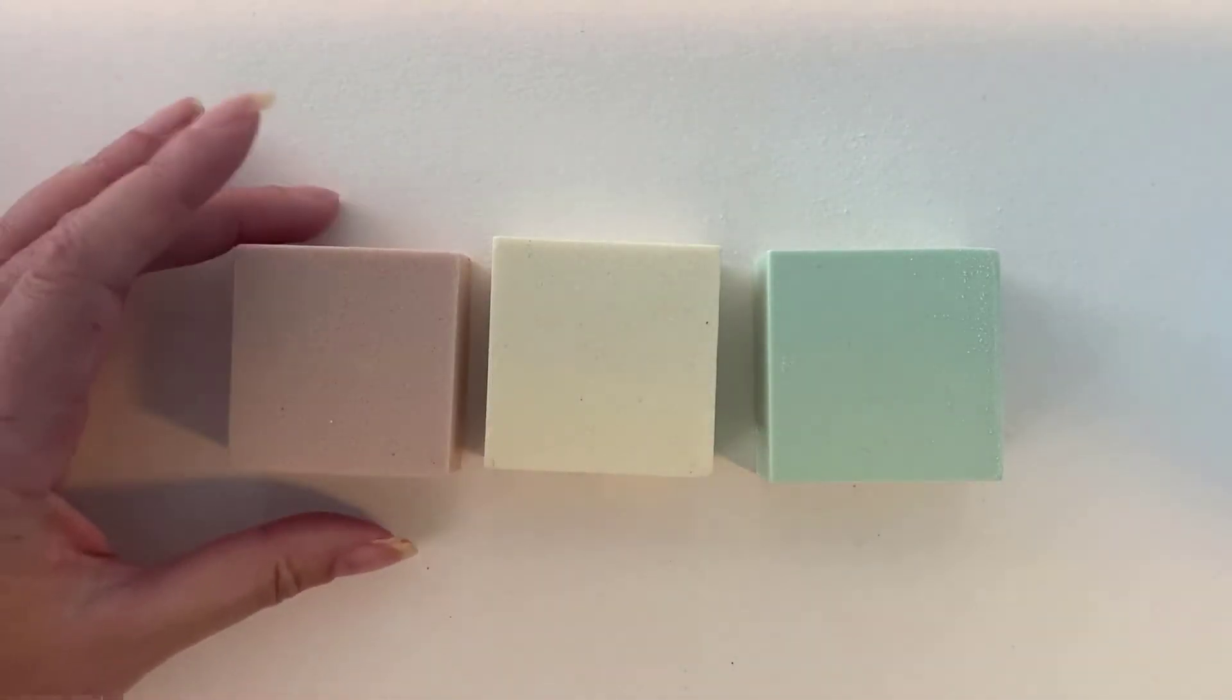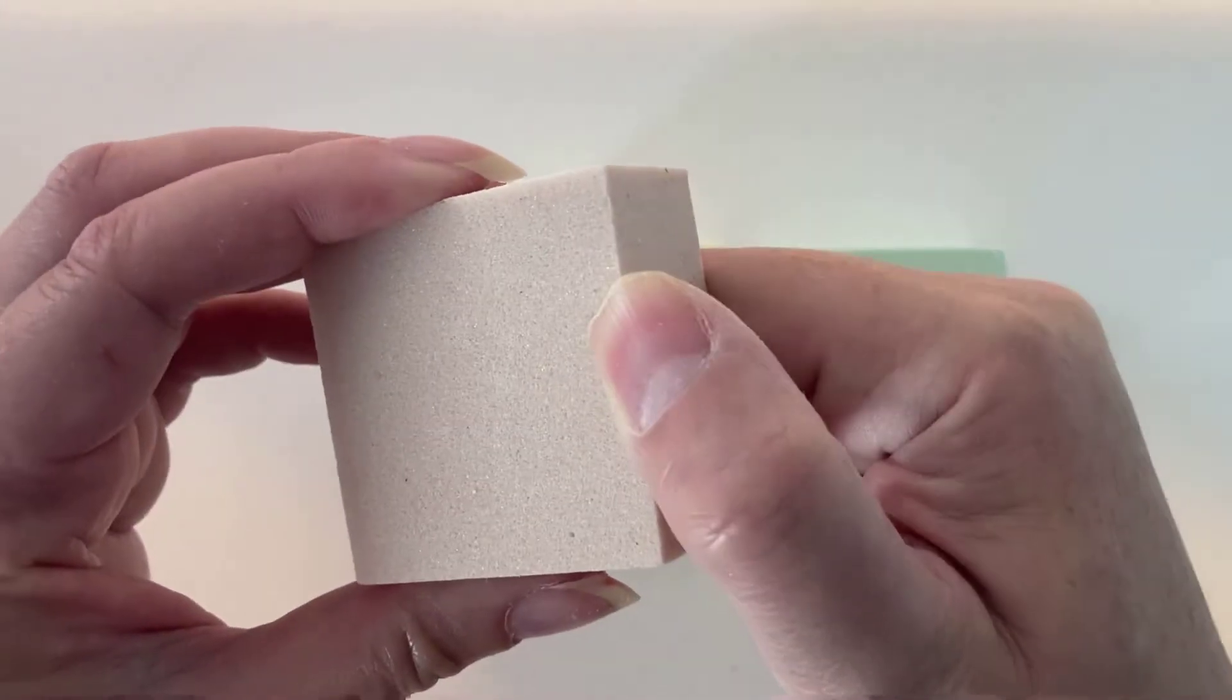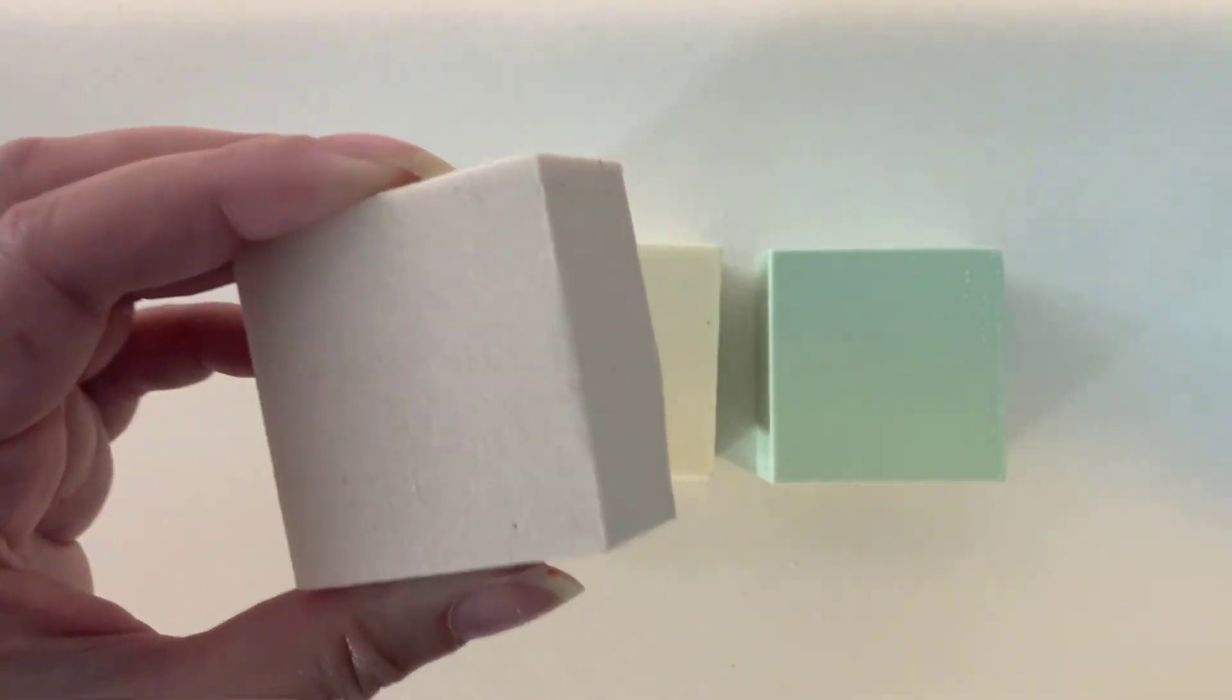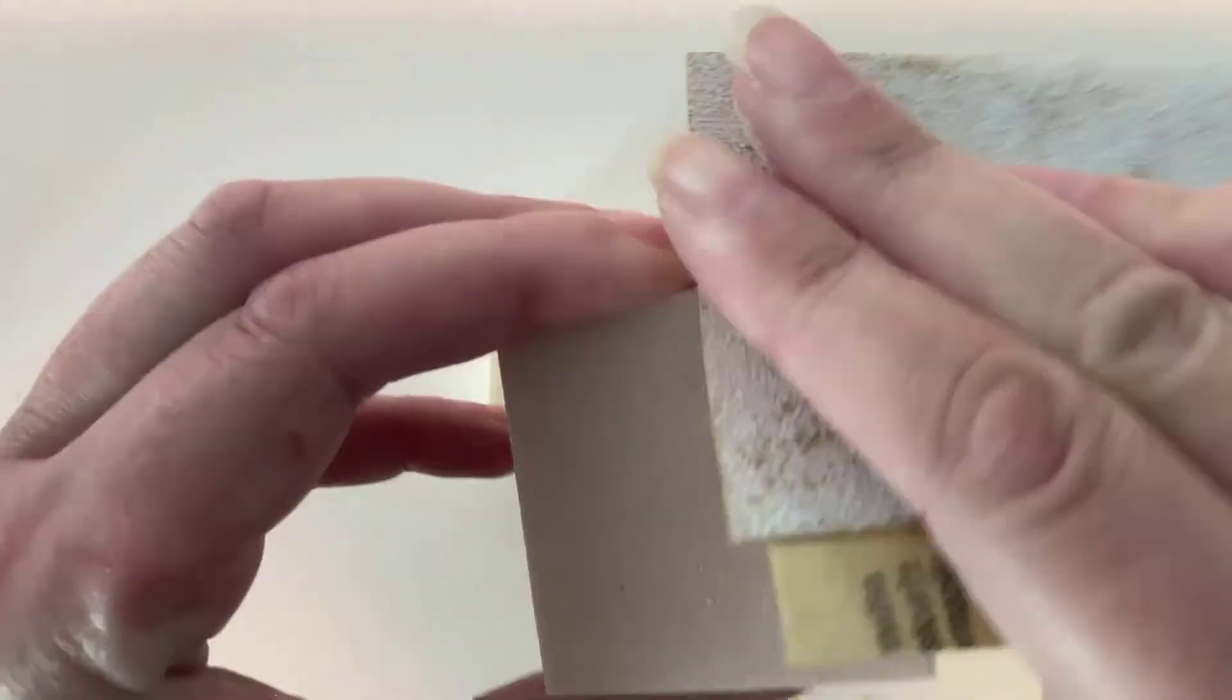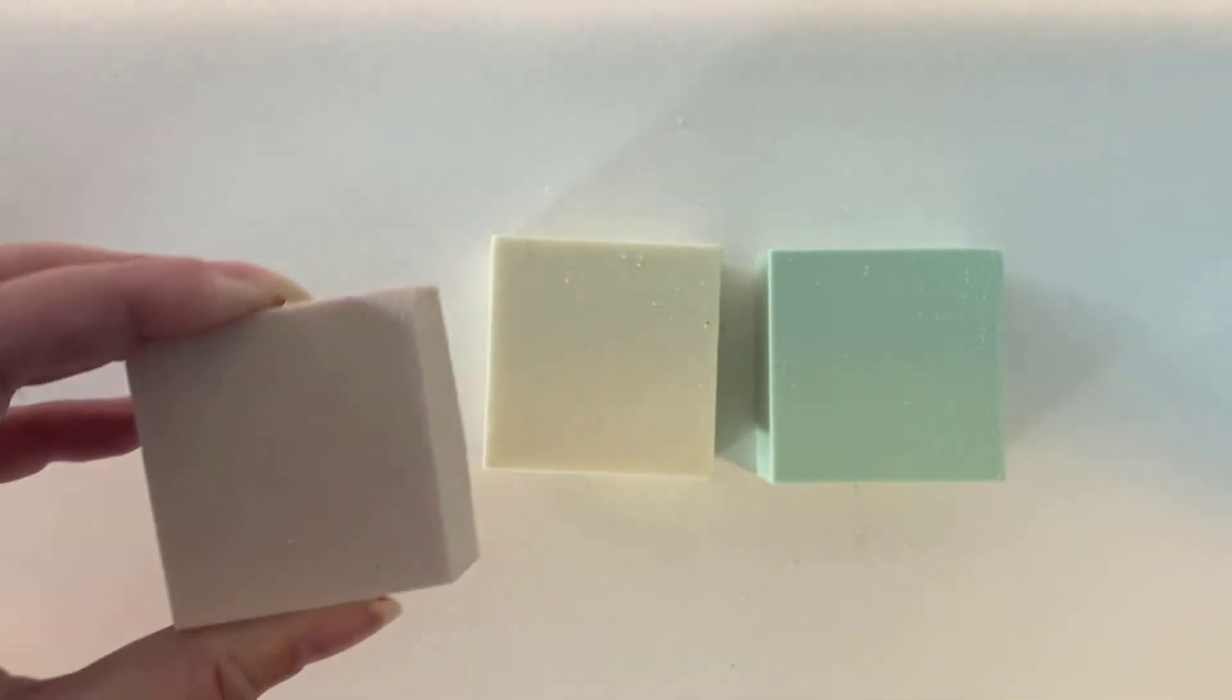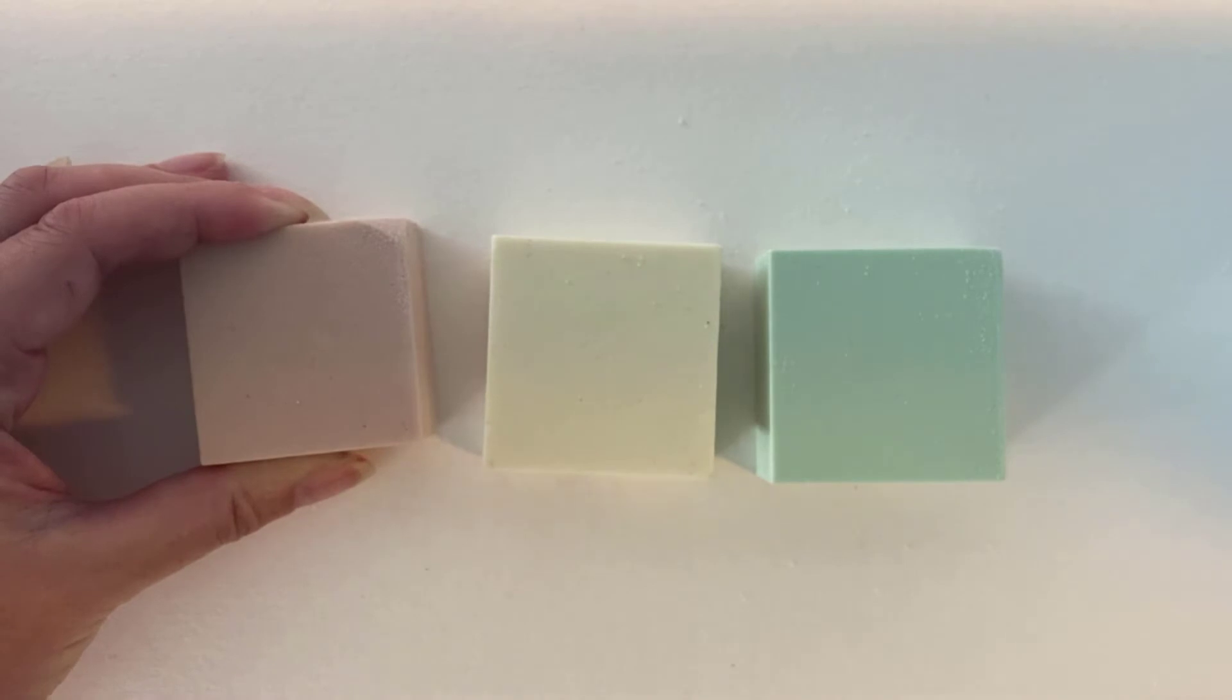You can sand any of these densities. The 4 is pretty soft, so as you can see it has a little bit of give and when you sand it sands very easily. You can even cut this with a kitchen knife.